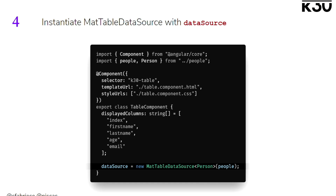I've read the documentation for the paginator, and it says that you can use a normal array too — you don't have to use MatTableDataSource. Why would we do that? Sure, if you want to spend 10 years on this. If you use a plain array, you would have to supply your own slicing of the data — when it asks for a given page, you have to figure out how to get that page. The MatTableDataSource already does that for you.